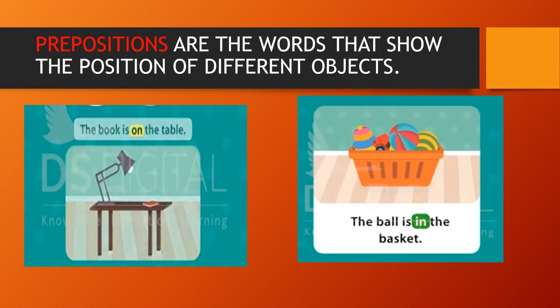Prepositions are the words that show the position of different objects. Now look at these pictures. The first one: the book is on the table. Now we have an idea of the position of the book — where it is? It is on the table. Second one: the ball is in the basket.